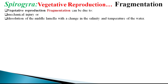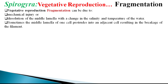This pressure leads to bulging of adjacent cells, and the strain on the junction between cells finally reaches a breaking point. Ultimately, the filament's septum at the middle portion starts to break and forcibly separates apart. This mechanism is generally called cell disjunction.